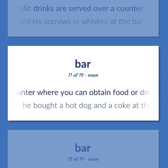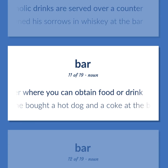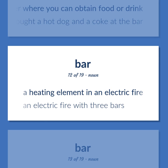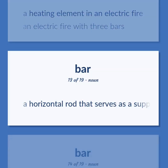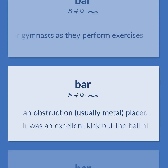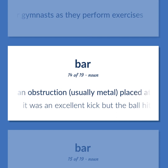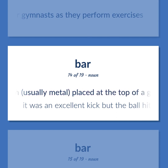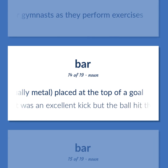A counter where you can obtain food or drink. He bought a hot dog and a Coke at the bar. A heating element in an electric fire. An electric fire with three bars. A horizontal rod that serves as a support for gymnasts as they perform exercises. An obstruction, usually metal, placed at the top of a goal. It was an excellent kick but the ball hit the bar.